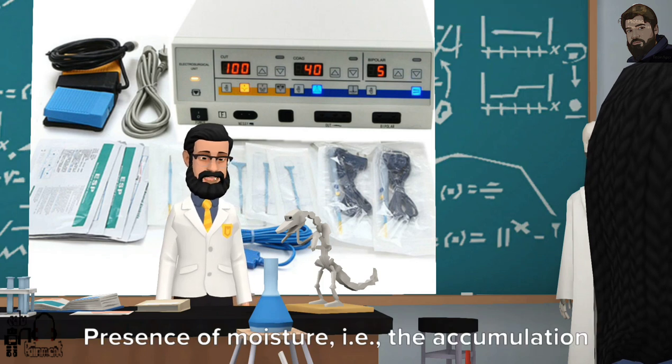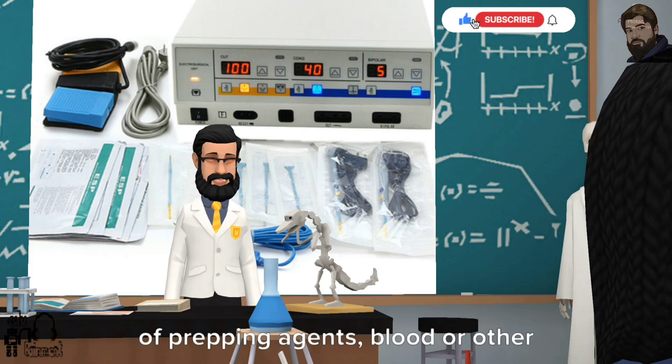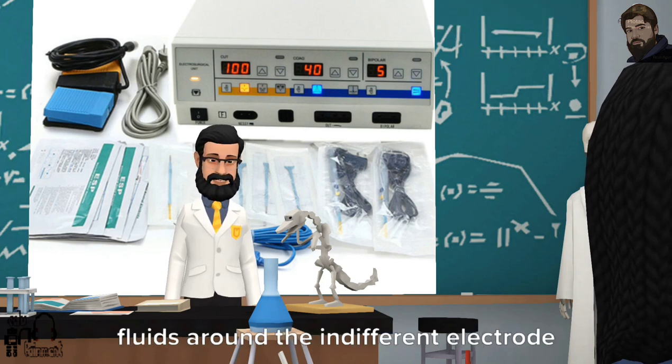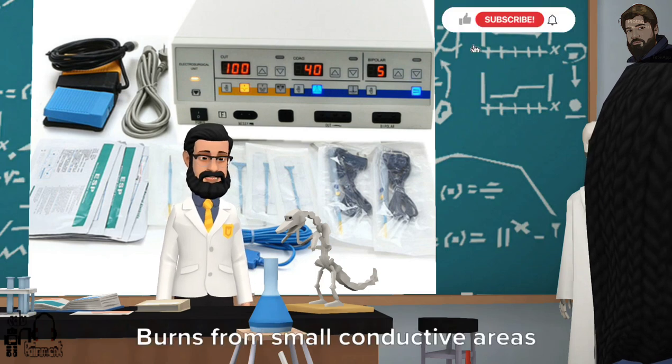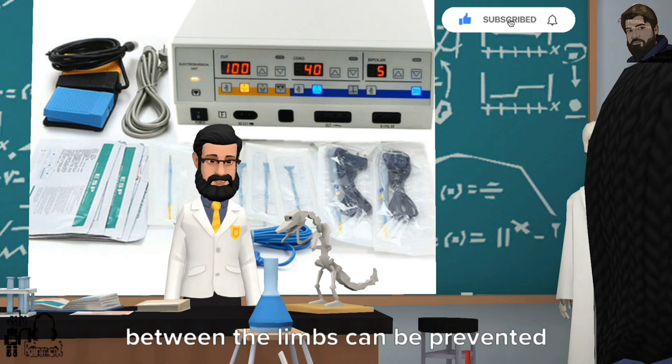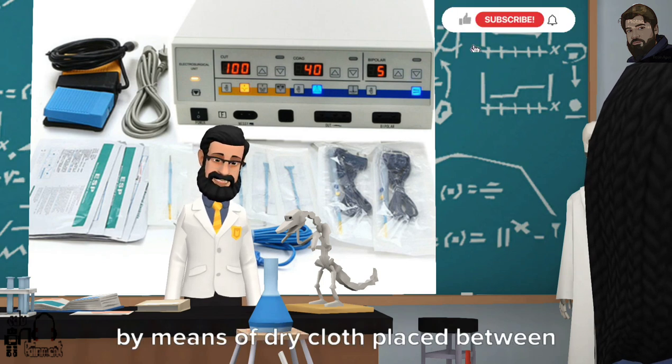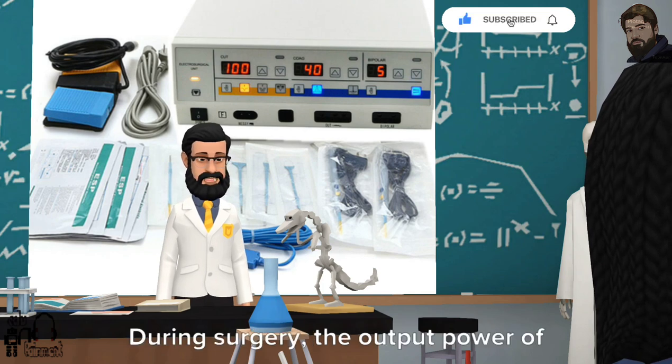6. Presence of moisture, that is, the accumulation of prepping agents, blood or other fluids around the indifferent electrode can give rise to small, highly conductive areas. Burns from small conductive areas between the limbs can be prevented by means of dry cloth placed between them.